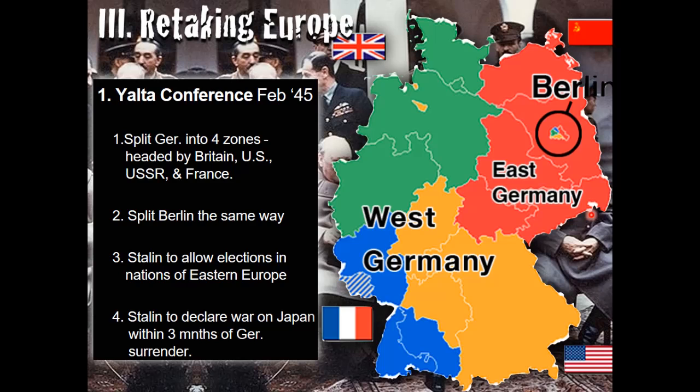The priority was the unconditional surrender of Nazi Germany. After the war, Germany and Berlin were going to be split into four zones, and the Nazi war criminals would be hunted down and brought to justice. One more commitment Stalin made — he agreed that the Soviet Union would participate in the United Nations, which it had not been involved in at all prior to this.